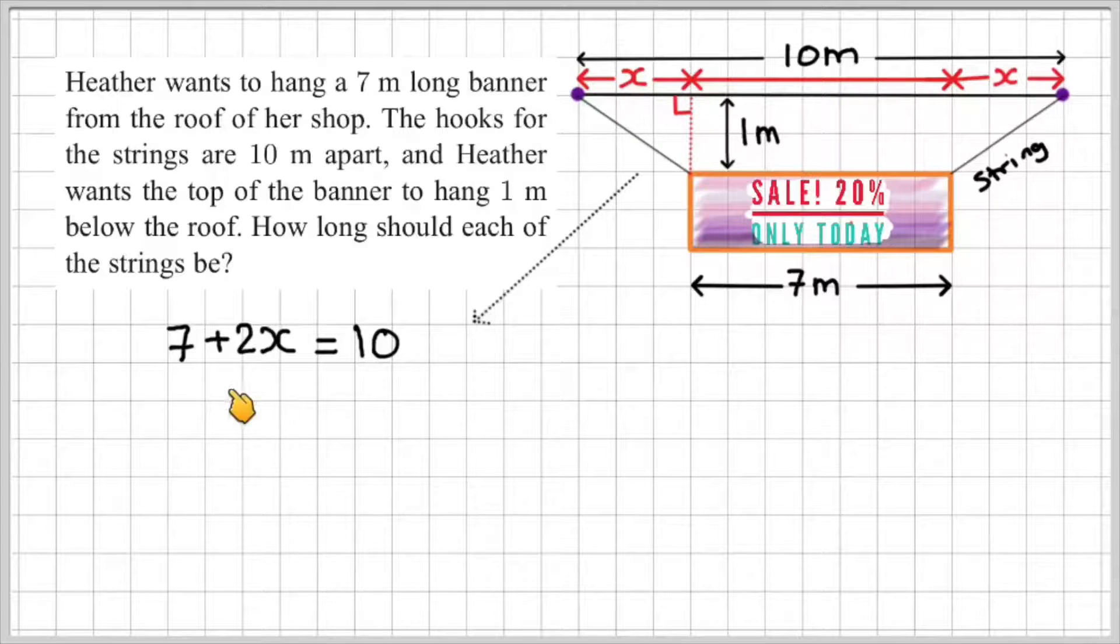So let's solve this equation. So 10 minus the 7 would give us 3. So 2x is equal to 3. And then 3 divided by 2 would give us x equals 1.5.